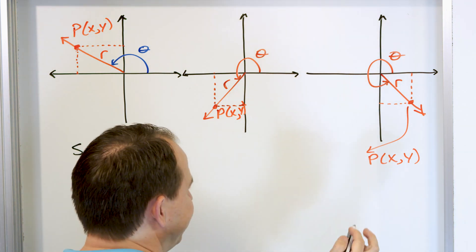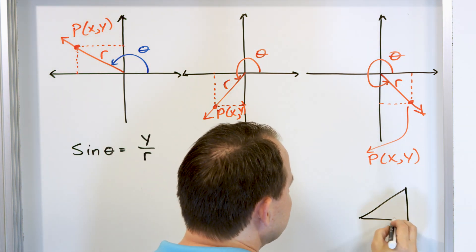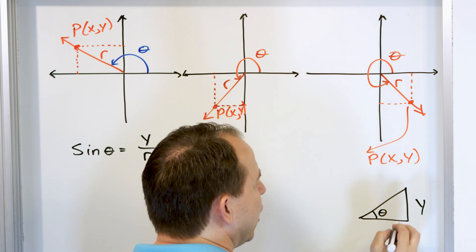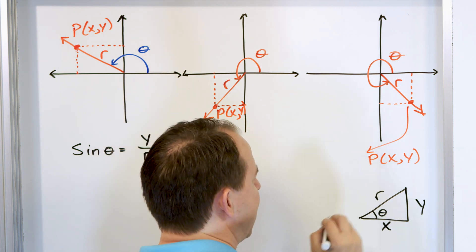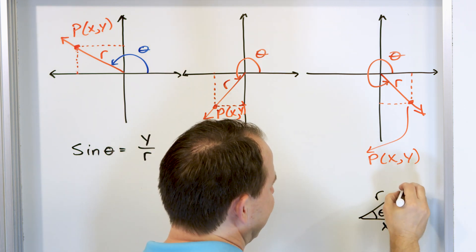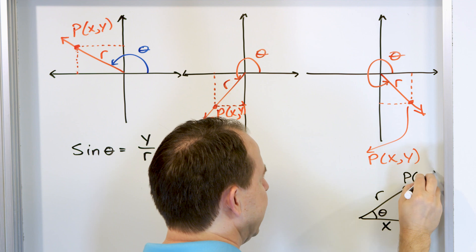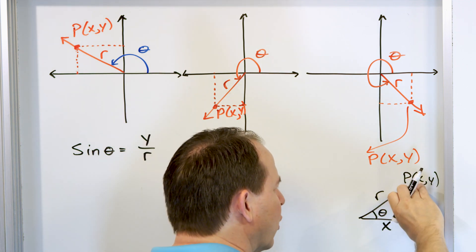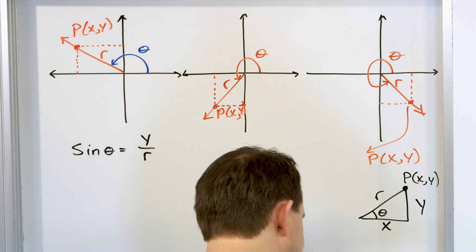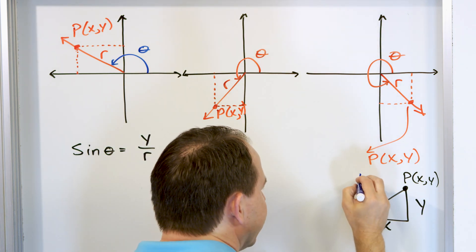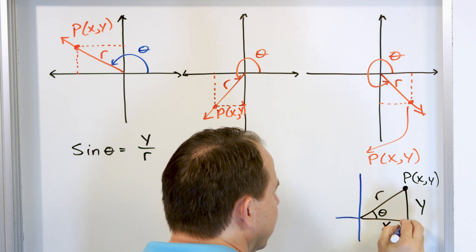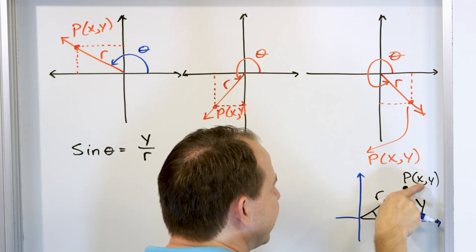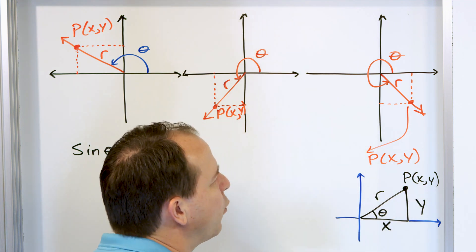I could draw a triangle — let me draw a little triangle here. This is the opposite side we call Y. This is the adjacent side we call X. This is the hypotenuse we call R. The point at the tip of that triangle is P(X, Y), because the X coordinate is the X coordinate of P, and the Y coordinate is the Y coordinate of P. The origin is at the bottom corner, and this triangle is just sitting on top of an X-Y plane.